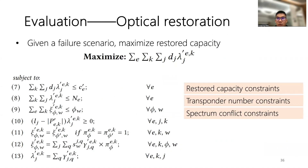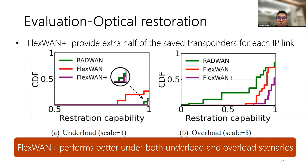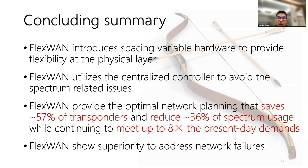Finally, we revisit the optical restoration ability of FlexiOne to address network failures. The goal of optical restoration is to maximize restoration capacity with existing optical hardware, subject to constraints such as restored capacity and transponder number. We further introduce FlexiOne+, which sacrifices half of the transponder savings. The figure shows restoration capability distribution across all failure scenarios. FlexiOne performs better than the baseline. In conclusion, FlexiOne introduces spacing-variable hardware at the physical layer, utilizes a centralized controller to avoid spectrum-related issues, provides optimal network planning algorithms reducing hardware cost while supporting up to 8 times present-day demand, and shows superiority in addressing network failures.